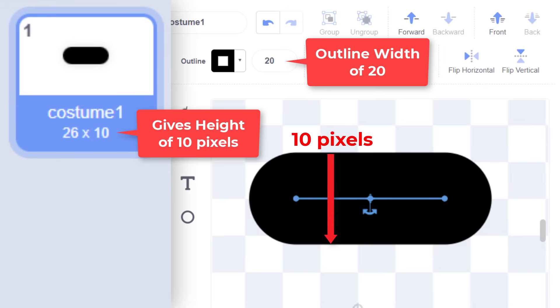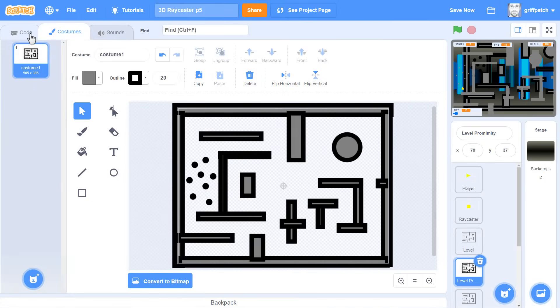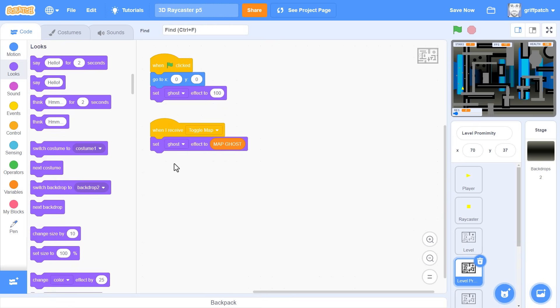And since it's 10 pixels across, but the line is centred on the edge of the shape, then that's actually only 5 pixel offset to our perimeter. Definitely worth bearing that in mind. Great, so into our code. We can delete this toggle map script, no need for that in this sprite.